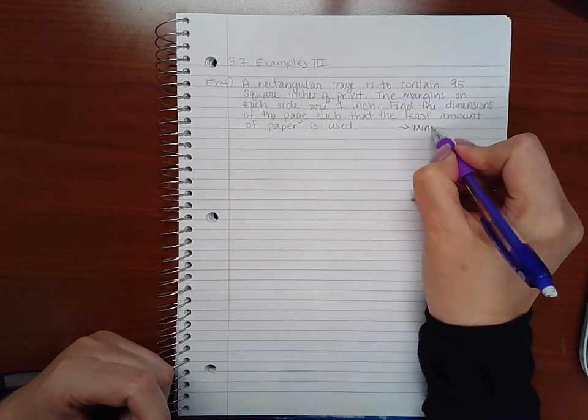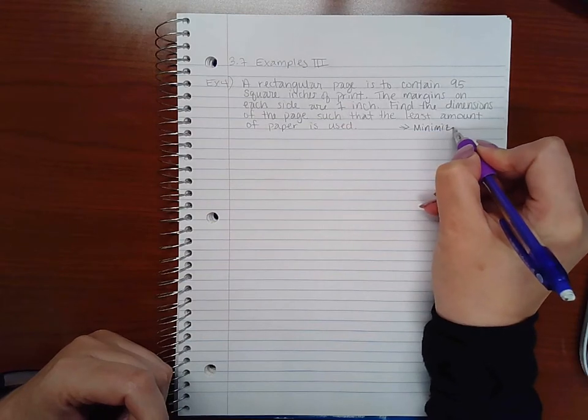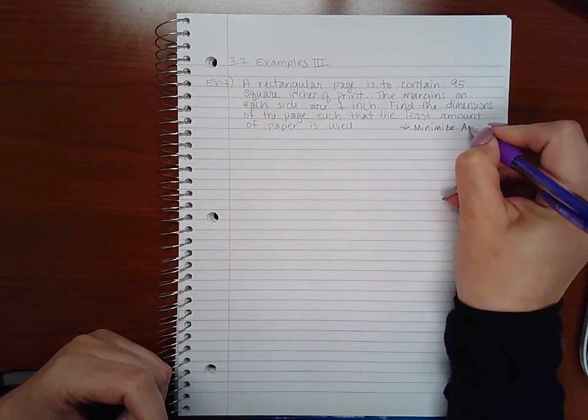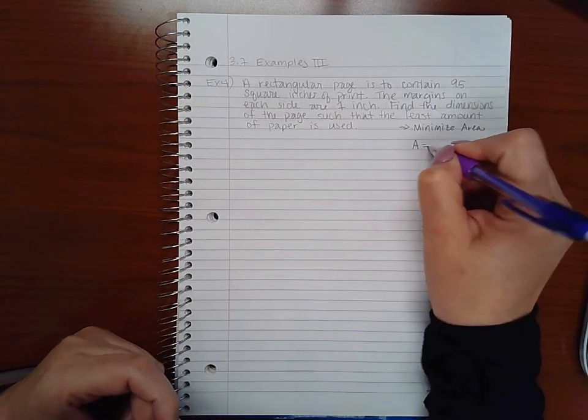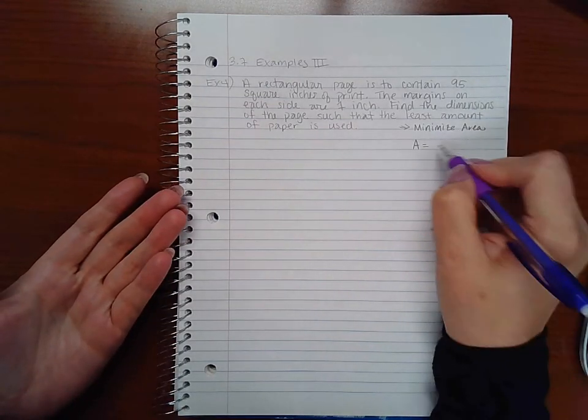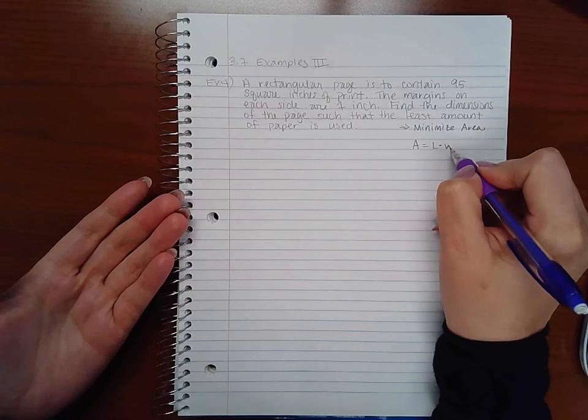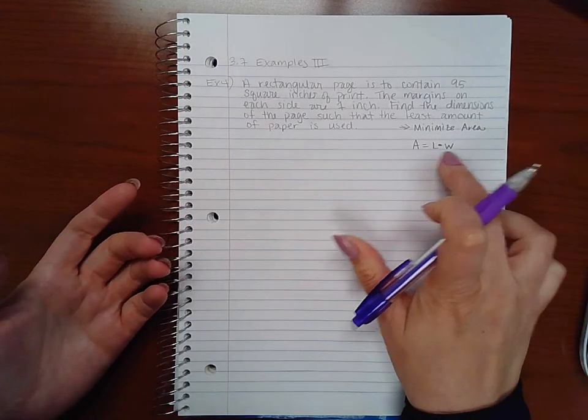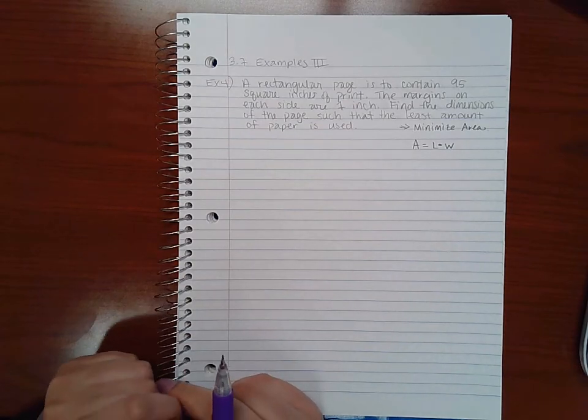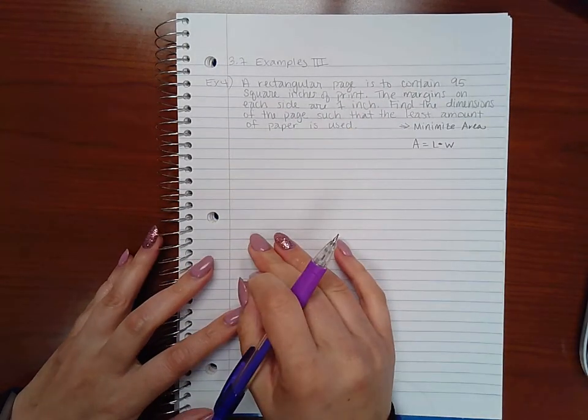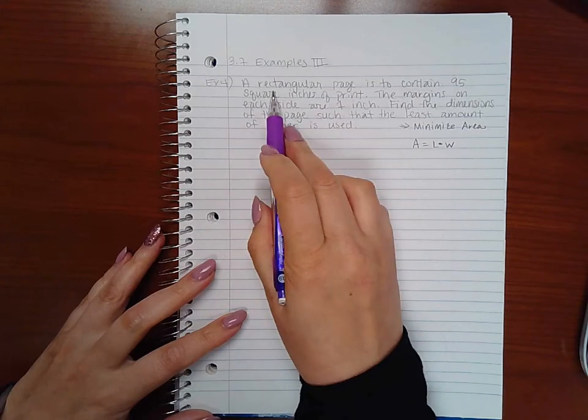The area of paper - well, paper is a rectangle, right? So it would be length times width. However, we do need to get this in just one variable before we can actually take the derivative of it.